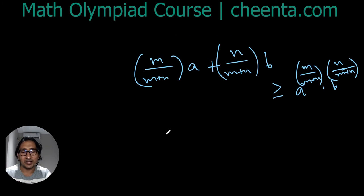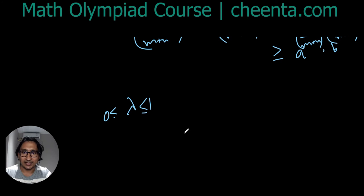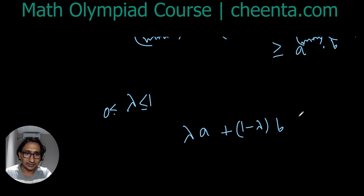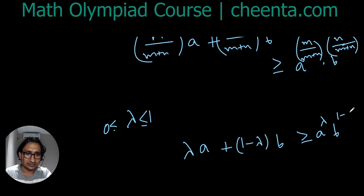So if we have a number lambda, some positive number between 0 and 1, then λa + (1-λ)b is greater than or equal to a^λ b^(1-λ).